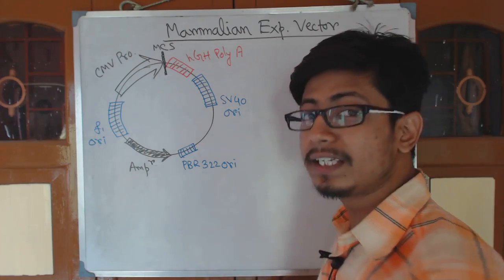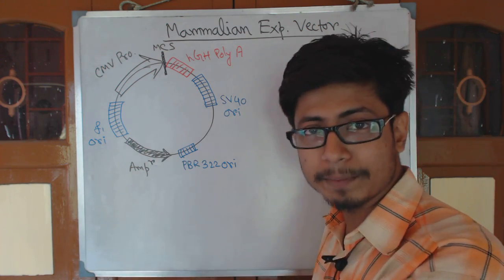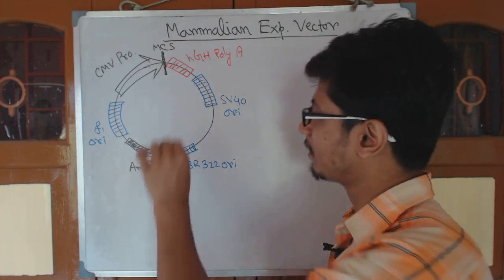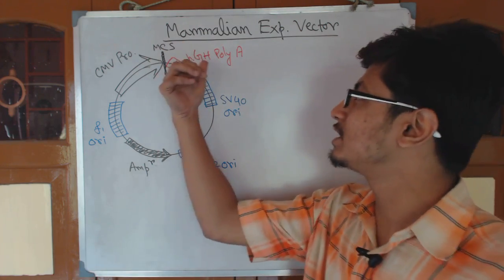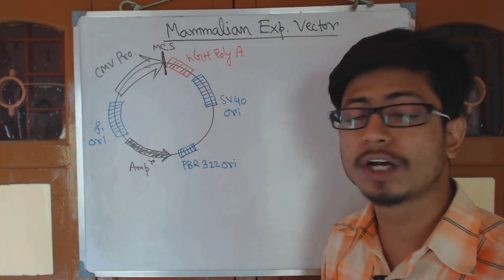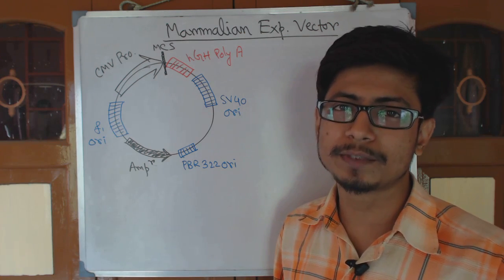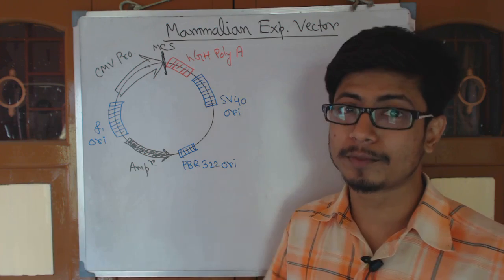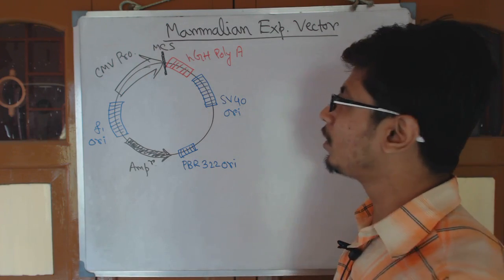We also have a selectable marker, which is a basic requirement for any vector. Here it is an ampicillin resistance gene acting as the selectable marker. There is also an HGH poly-A sequence — a polyadenylated tail — which is very helpful for extracting mRNA after production and also serves as a tag to identify and fish out our protein of interest from a mixture.